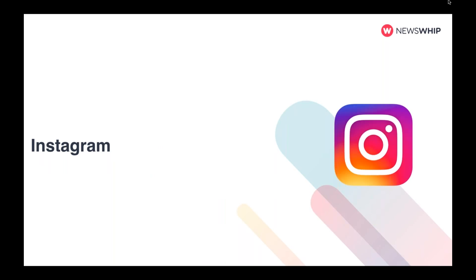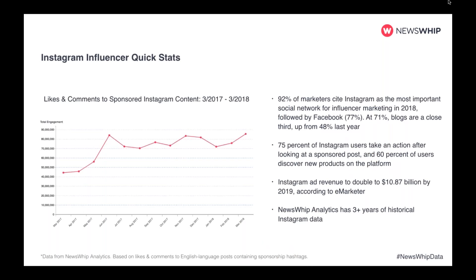Instagram is actually the easiest to start looking at for influencers. 92% of marketers cite Instagram as the top social network for influencer campaigns, followed by Facebook and blogs, surprisingly. Nearly three-fourths of Instagram users will take an action after looking at a sponsored post, and 60% are discovering new products on the platform. There's a huge opportunity on Instagram. Ad revenue is going up and we at Newswhip have three-plus years of historical Instagram data, allowing us to really analyze trends, holidays, and campaigns.